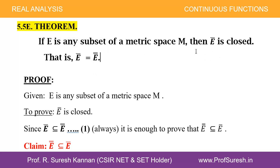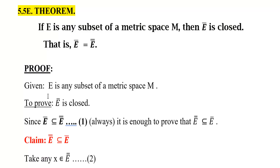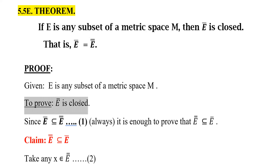The closure of E, Ē, is closed. Given: E is any subset of a metric space M. To prove: Ē, the closure of E, is closed. That is, we need to prove Ē = E̅̅.